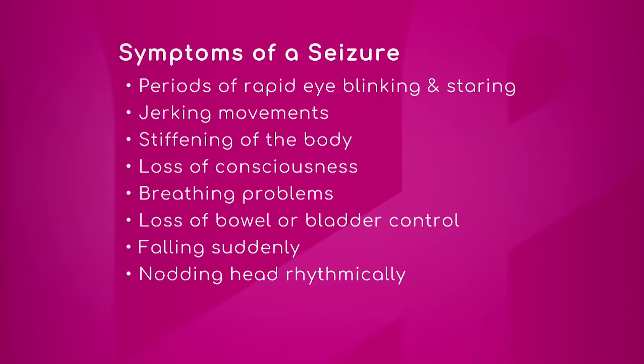By all means, it depends where the seizure is starting from in the brain — that would be the initial symptom. And if it spreads throughout the brain, you'll have different symptoms. If it's generalized, you may have a generalized tonic-clonic. For example, a patient would start with a symptom which could be just twitching of one arm, and it can spread to half of the body, then spread to the entire body. Sometimes the patient is aware at the beginning, sometimes they lose consciousness immediately, and sometimes they have no memory.